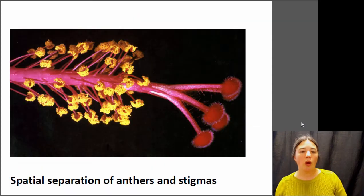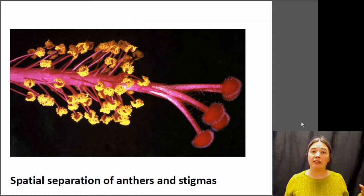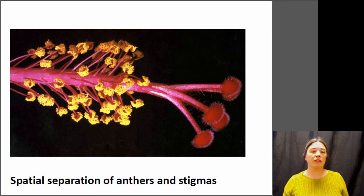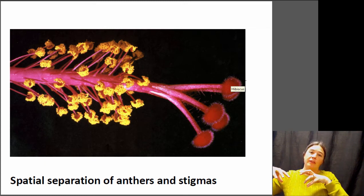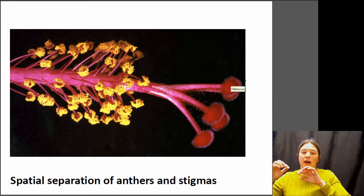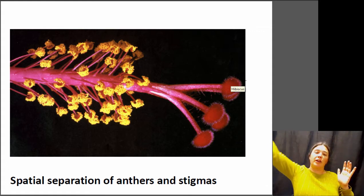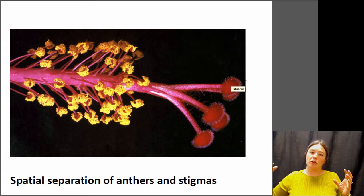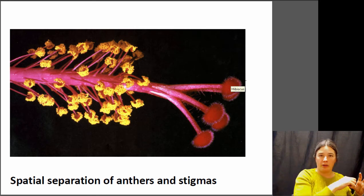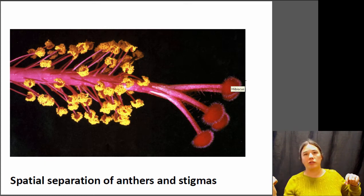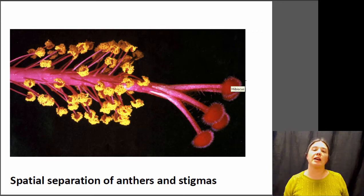One thing plants can do is spatially separate where the pollen is produced and where the stigmas are. This is the center of a hibiscus flower — at the base of the flower is where the pollen granules are formed, and at the tip is where the stigmas are. Pollinators land at the tip of the stigma and walk down to the base of the flower to feed, then fly straight off without walking back out. This ensures the first thing the insect reaches is where it can drop off pollen from another flower, and then it picks up new pollen and flies off without depositing it on the same flower.